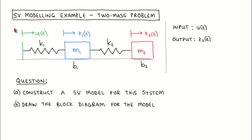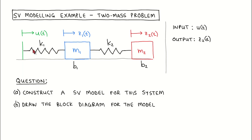A diagram of the system we want to model is shown here. There is a blue object with mass m1 and a red object with mass m2. They can move horizontally and their displacements from the equilibrium positions are given by z1 and z2 respectively. As they move, they experience viscous friction with coefficients b1 and b2. There is a spring between the two objects with spring constant k2, and a spring with spring constant k1 between the blue object and a connection point.